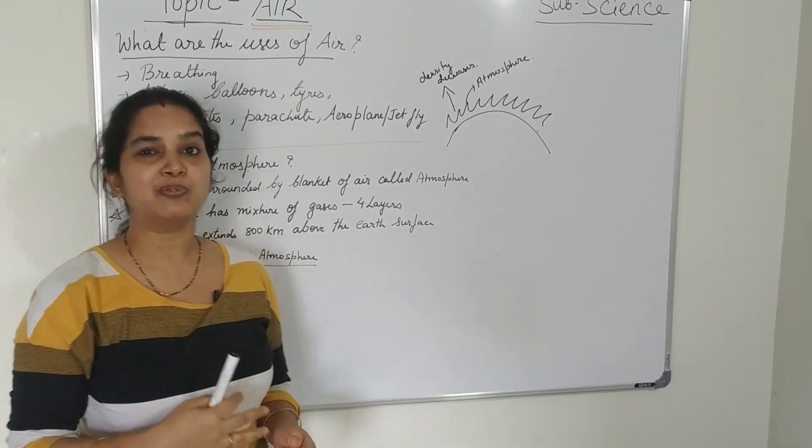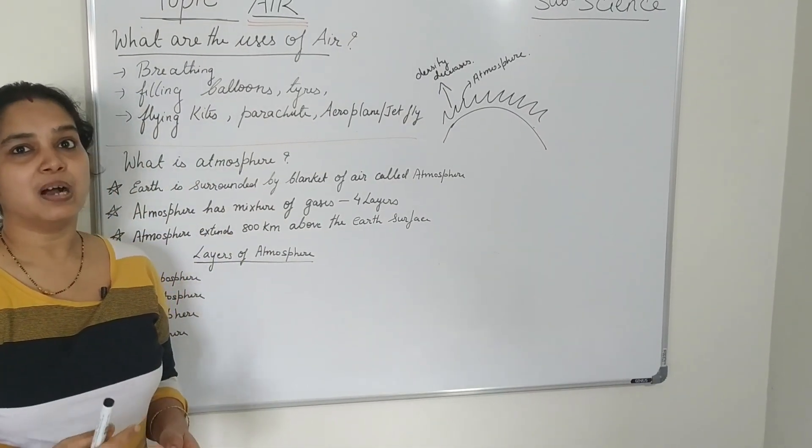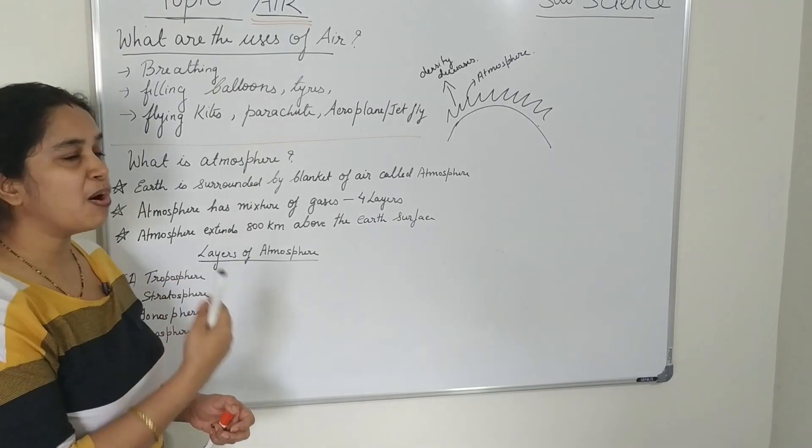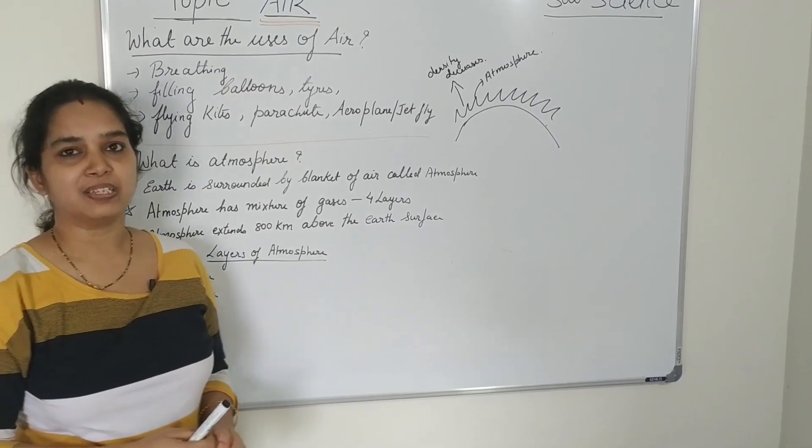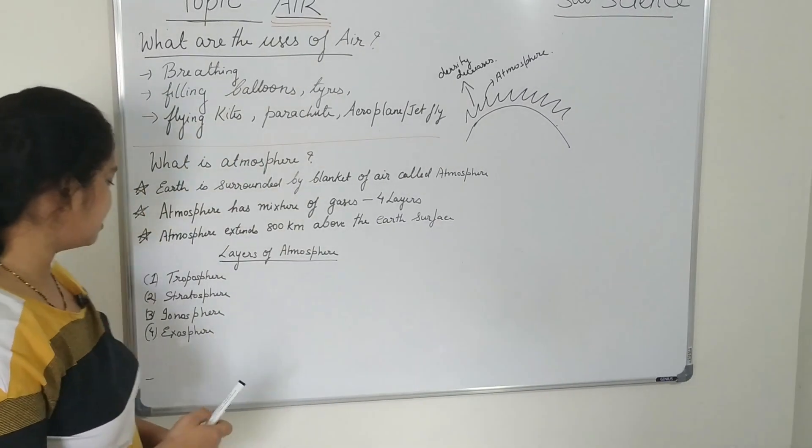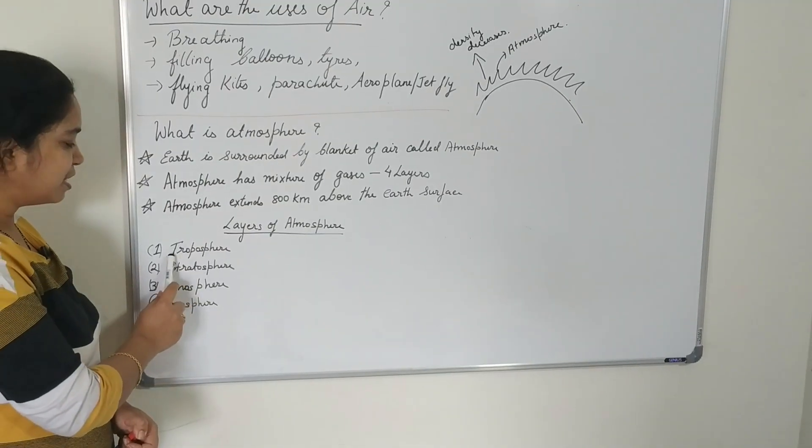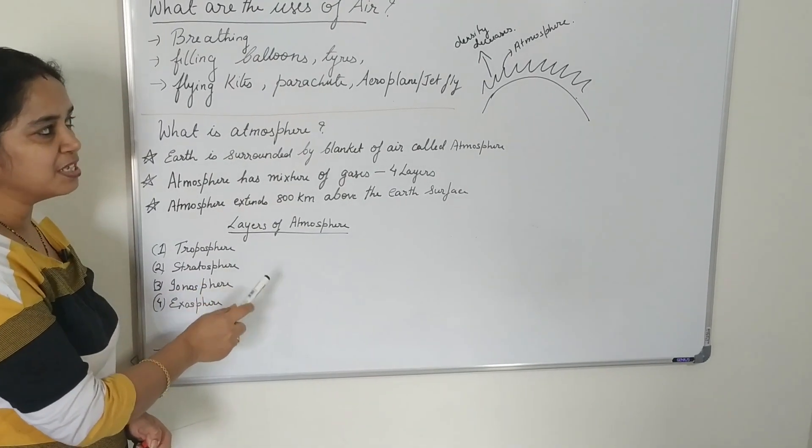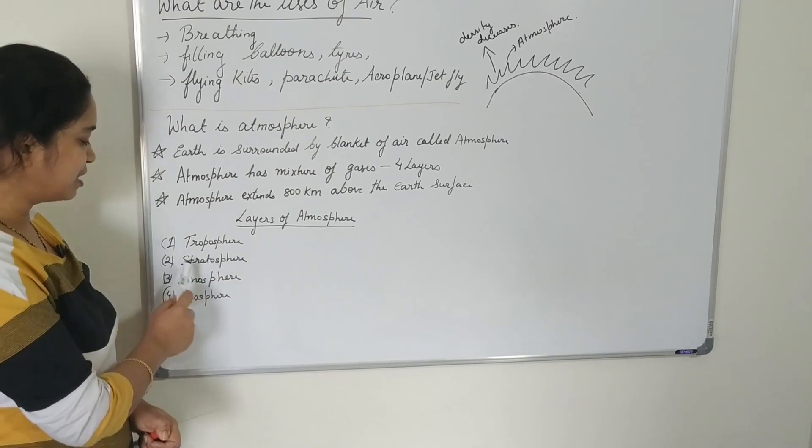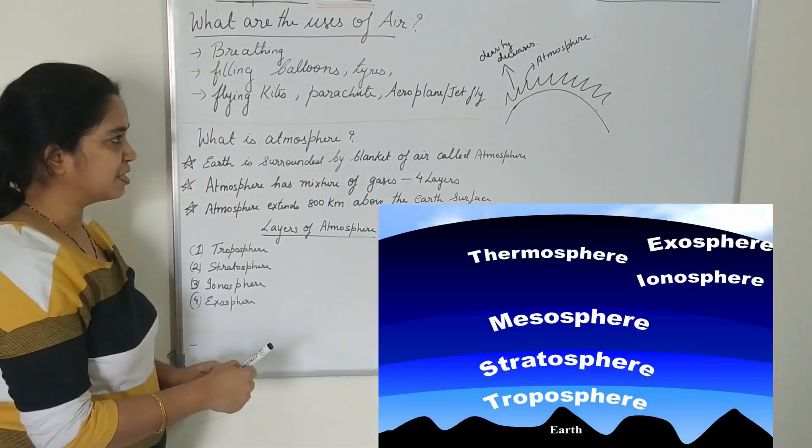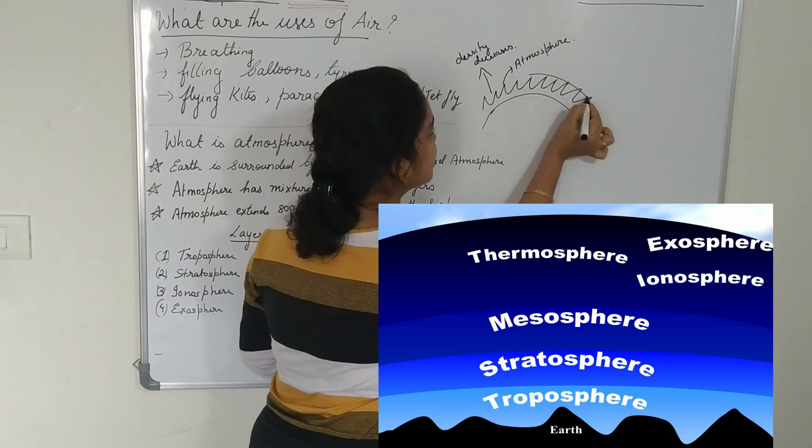Atmosphere extends up to 800 kilometers above the earth's surface in which all the four layers are present. What are the four layers of the earth's surface? That is, first layer is the troposphere. That is the first layer near the earth's surface. Second is the stratosphere. So the layers are like this.